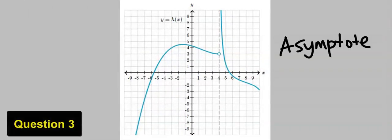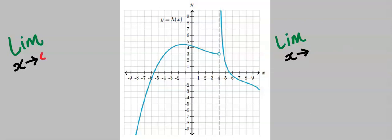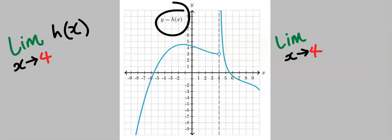Next, let's consider this question. This function contains a vertical asymptote passing through x = 4, hence this limit tends to 4 and the given function is h(x).